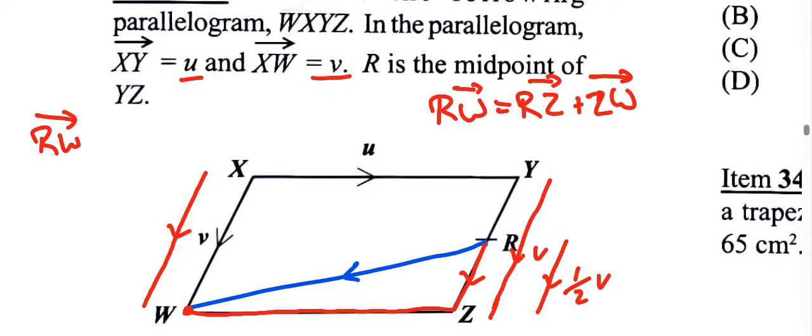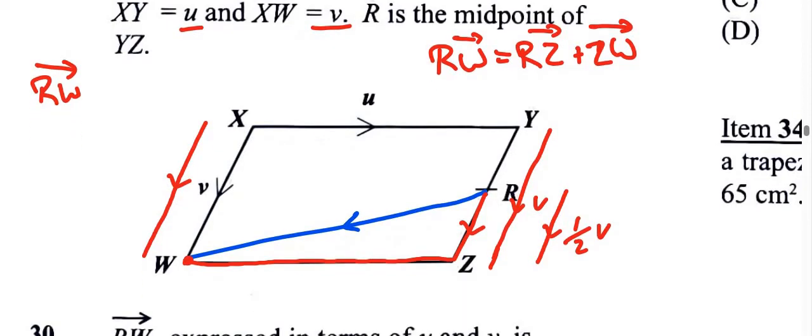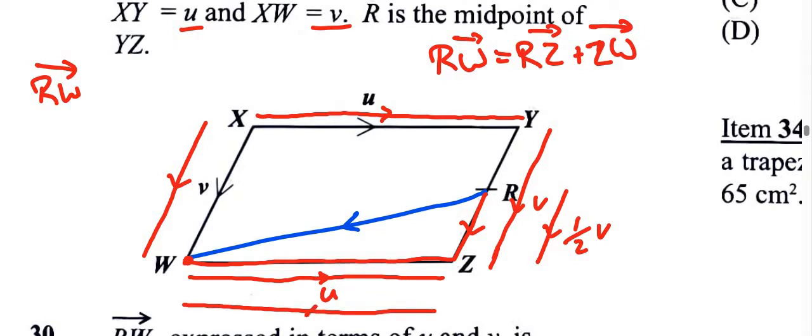And then if we want to go from z to w. Now remember, from x to y, that's u. That means from w to z, opposite sides, same line, same direction, that's also u. But now we want to go from z to w. So once we go in the opposite direction, then that will be negative u.